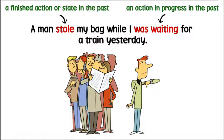We use the past simple and the past continuous together to talk about actions that happened at the same time.